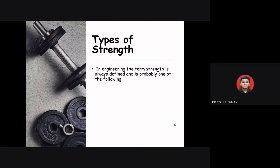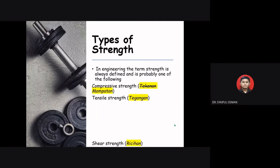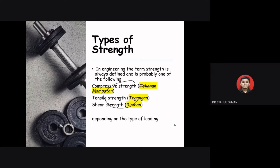In engineering, the term strength is always defined as one of the following: compressive strength (mampatan in Malay), tensile strength (tegangan), or shear strength. All these types of strength depend on the type of loading that we apply to the material.